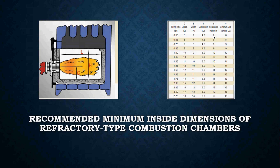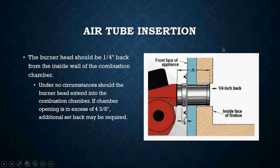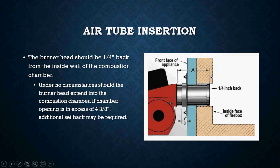The suggested height for a 0.5 GPH nozzle chamber is 8 inches off the floor, with a minimum diameter of 8 inches. When inserting a burner into the combustion chamber, the burner head should be a quarter inch back from the inside wall of the combustion chamber. Under no circumstances should the burner head extend into the combustion chamber. If the chamber opening is in excess of 4 and 3/8 inches, additional setback may be required. Always follow manufacturer recommendations for correct burner positioning.